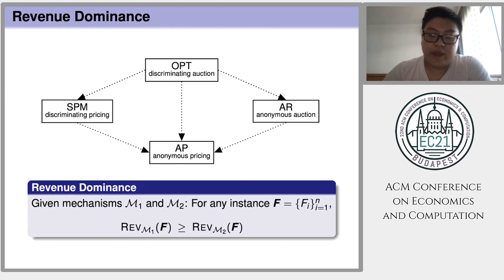Formally, if we consider two mechanisms M1 and M2, then we define revenue dominance in this way. For any instance, the revenue from M1 is always bigger than the revenue from M2.